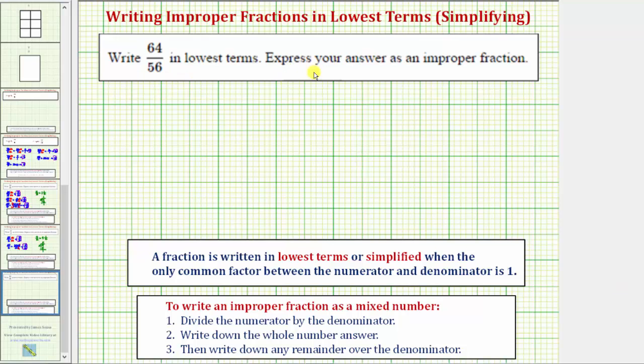We're asked to write 64/56 in lowest terms and express the answer as an improper fraction. Even though this question asks for an improper fraction, we'll also review how to write an improper fraction as a mixed number. A fraction is written in lowest terms or simplified when the only common factor between the numerator and denominator is one.